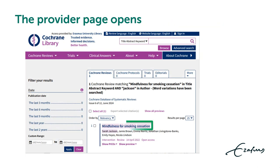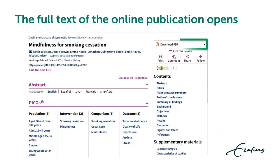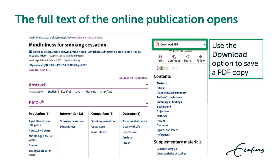The provider page opens. The Cochrane Database of Systematic Reviews displays the search result. Click the title to go to the publication. The full text of the online publication opens. Use the download option to save a PDF copy.